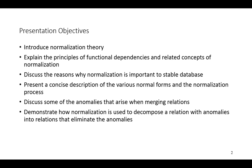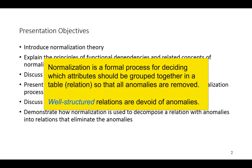When transforming an ER model into a set of relations, typically what we have is a set of well-structured relations. However, there's no guarantee that all anomalies will have been removed during that transformation process. So normalization is a formal process for deciding which attributes should be grouped together in a table so that all anomalies have been removed. This is what we mean by a well-structured relation — they would be devoid of anomalies.